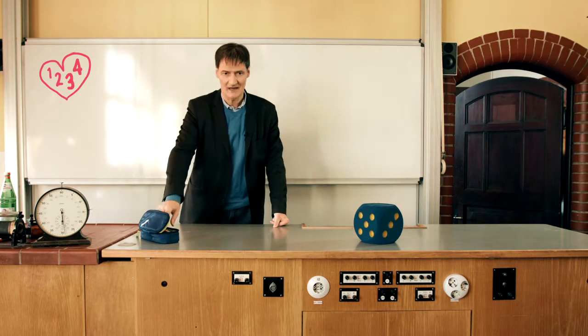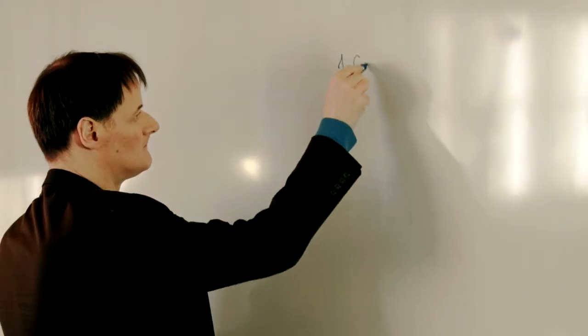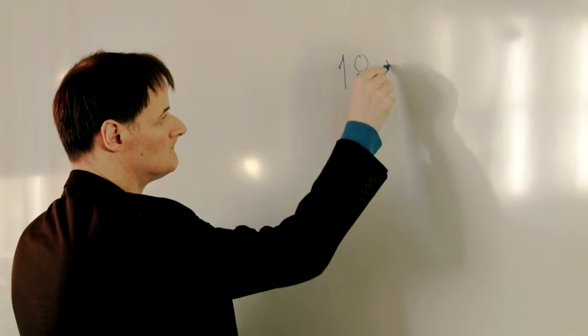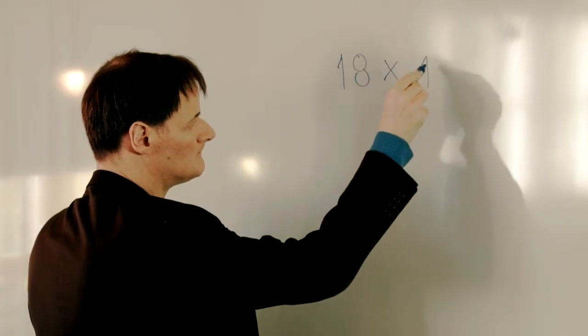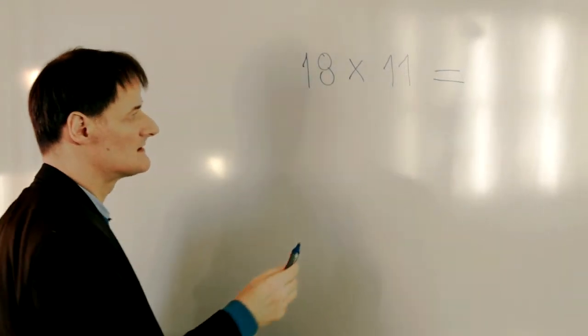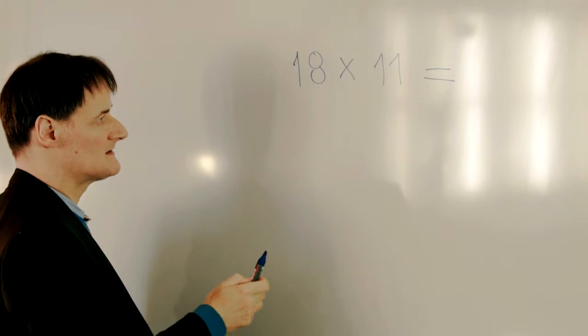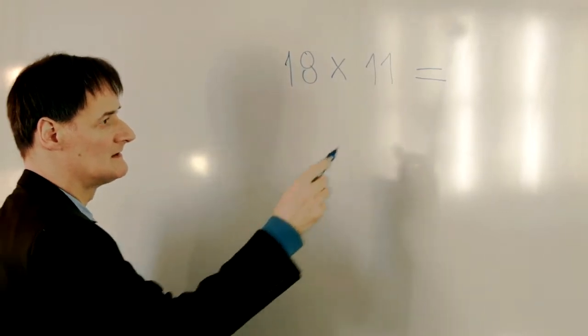For example, 18 times 11. First write down the last digit in the number 18. That means 8.